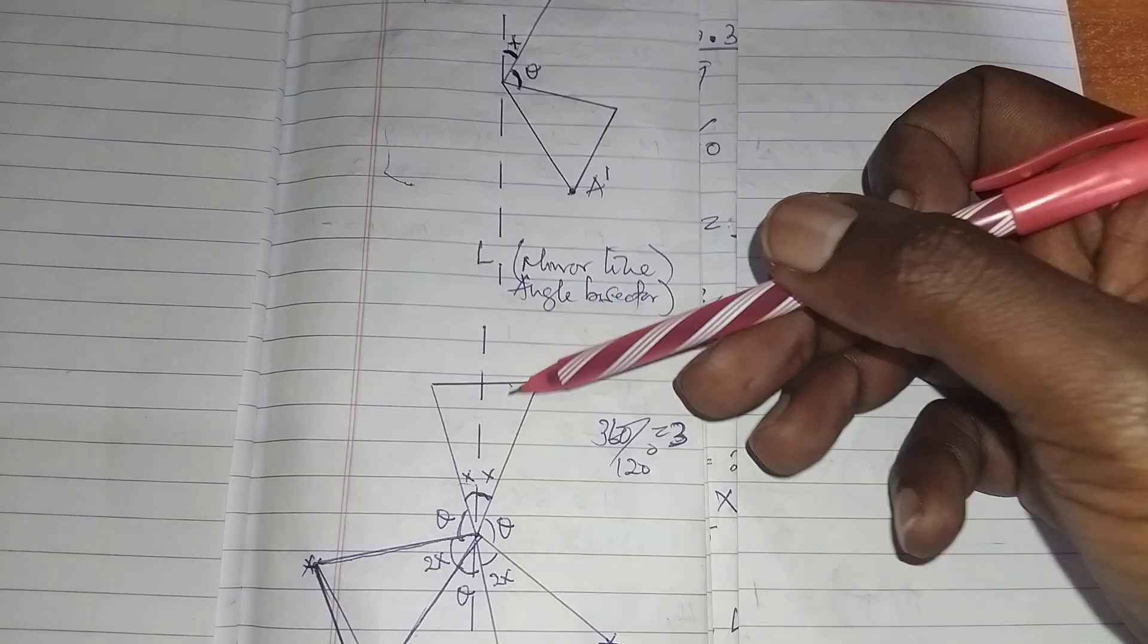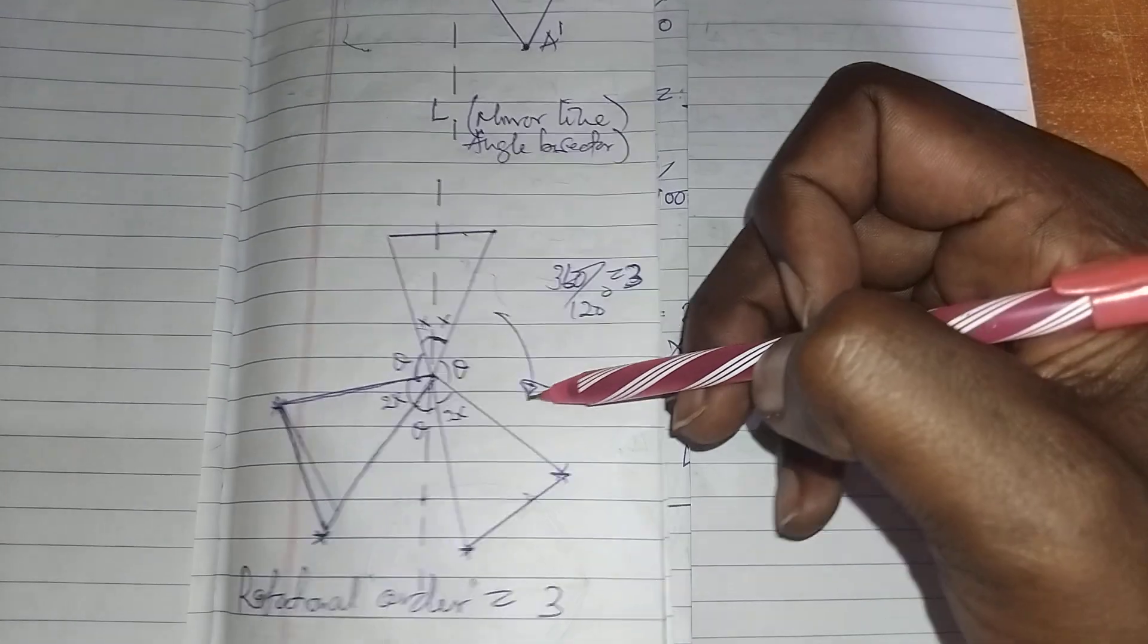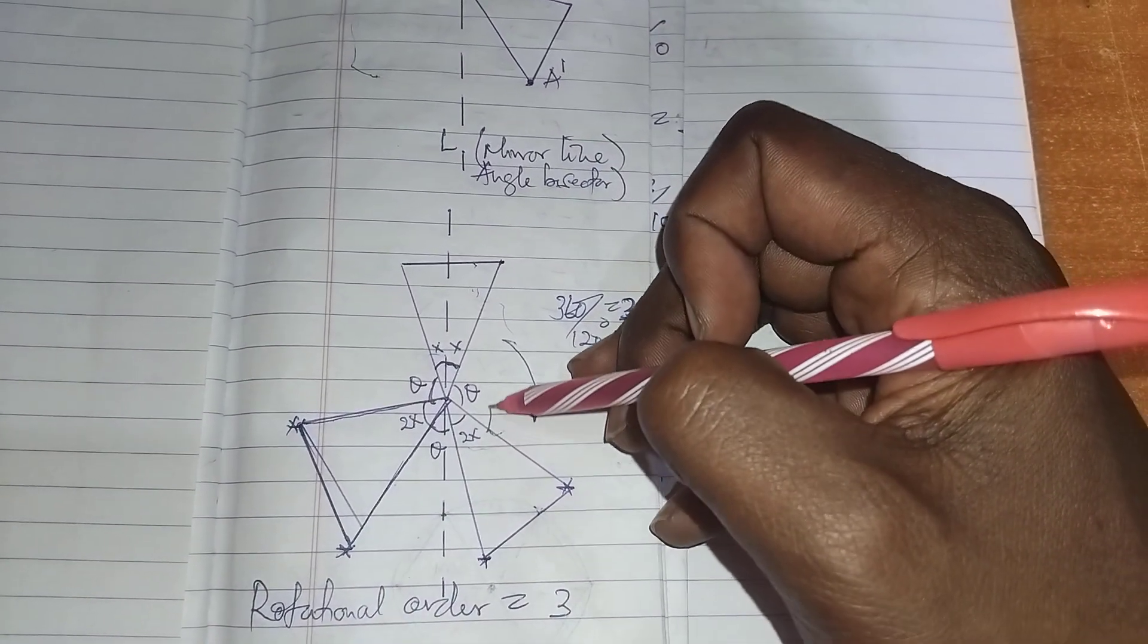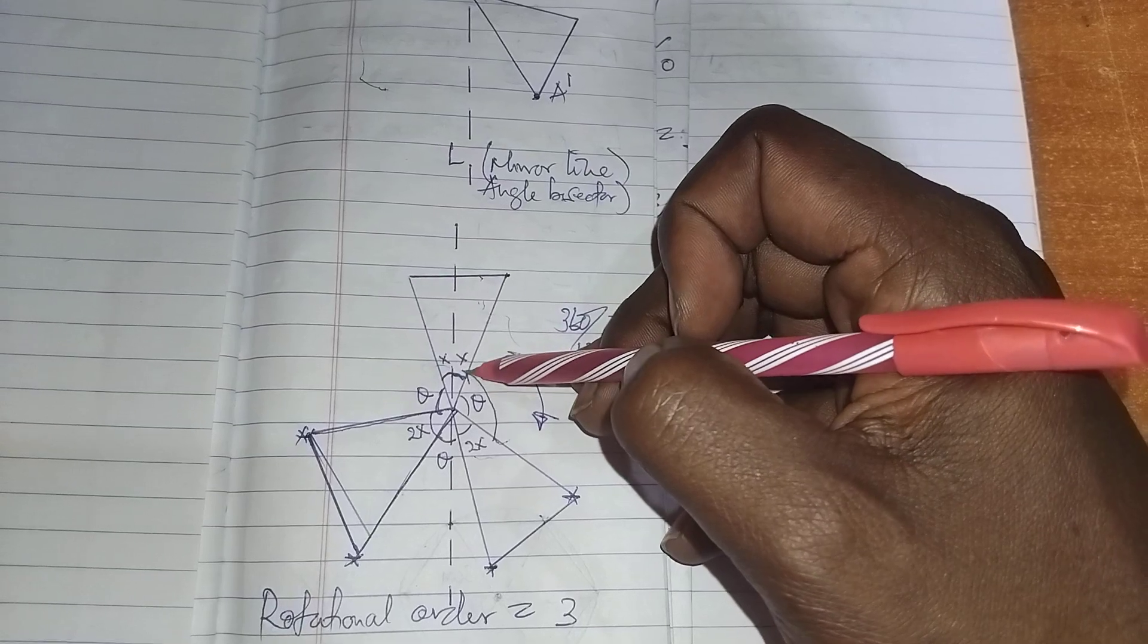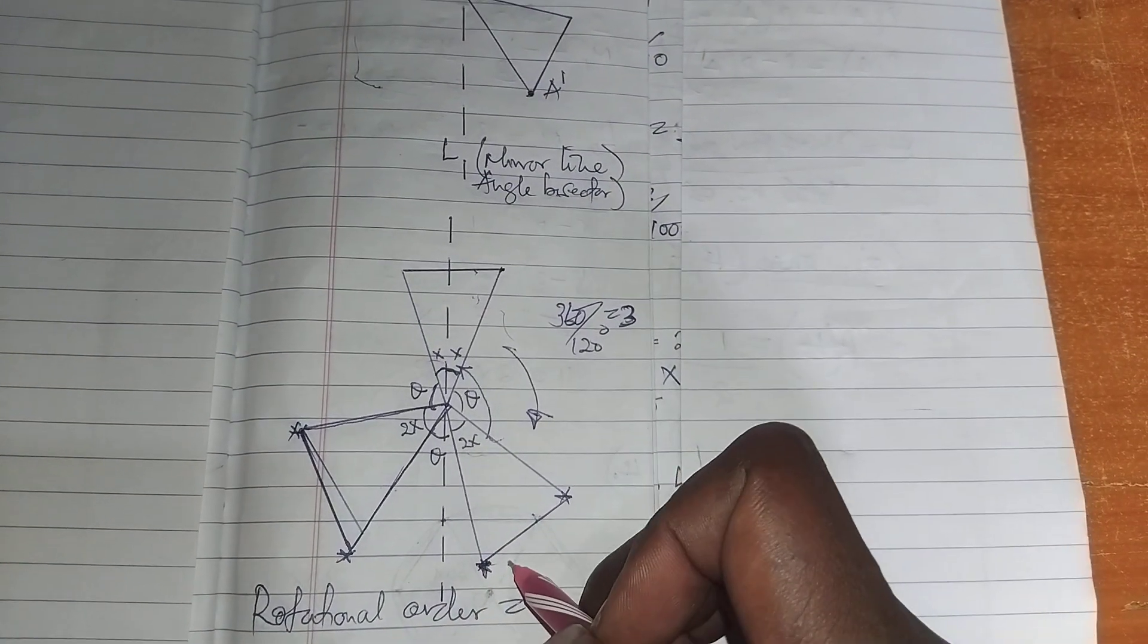This object is rotated from this position to this position. You also have to measure this angle. You have to measure this angle between here and also the angle between the two corresponding points.